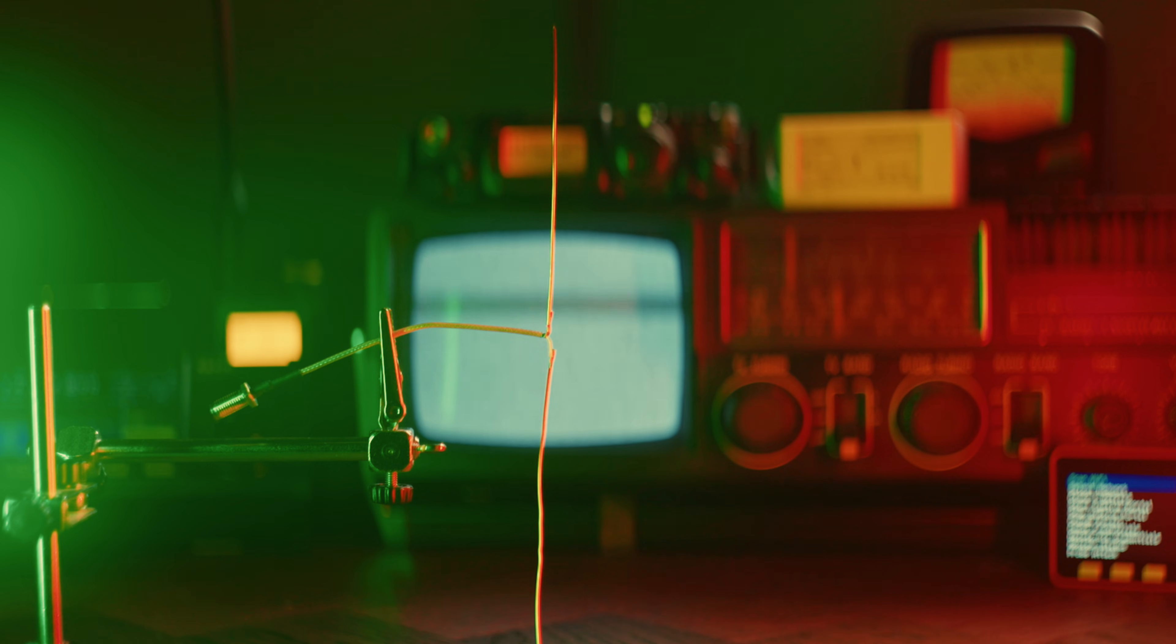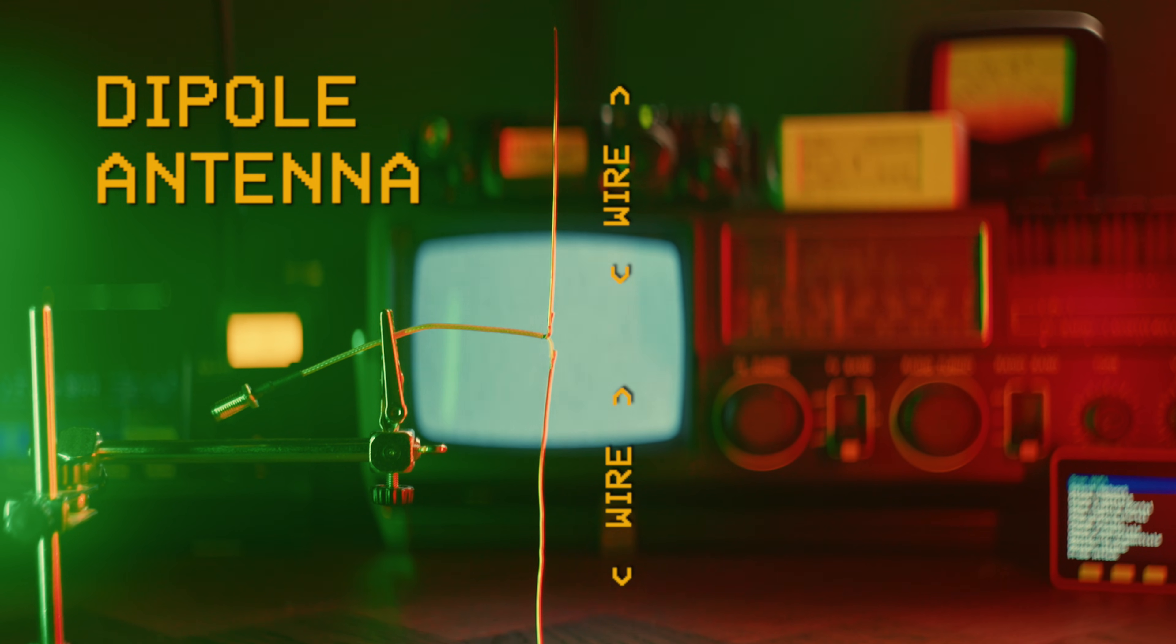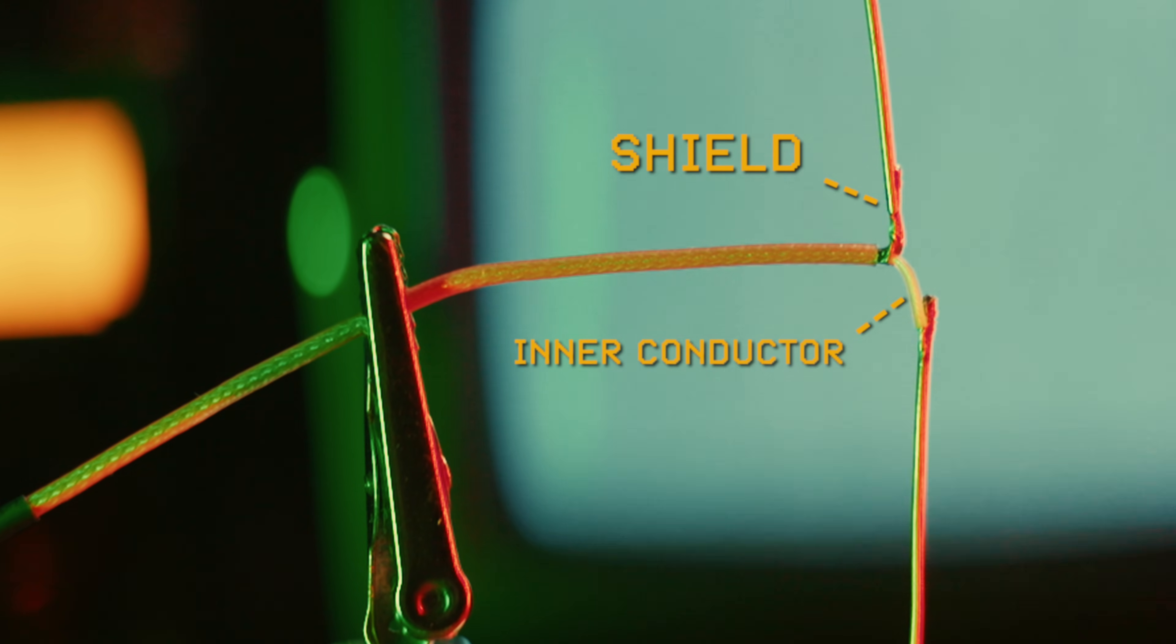To understand which antenna is the best one, we first need to understand what type of antenna it is. The most basic antenna type is a dipole. It's just two pieces of metal of equal length connected to the center pin and shield of an antenna cable or connector.